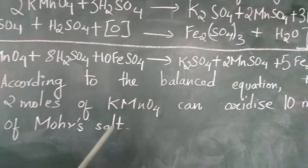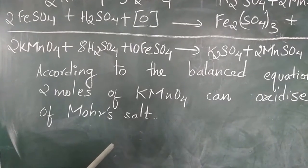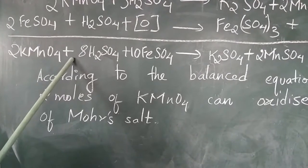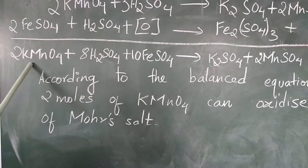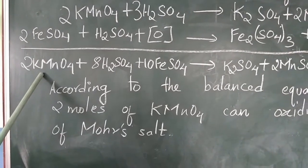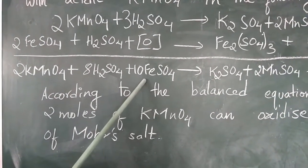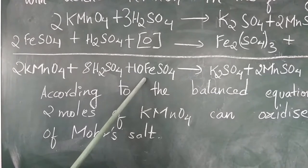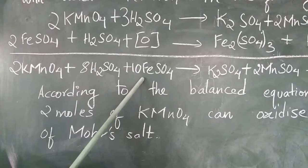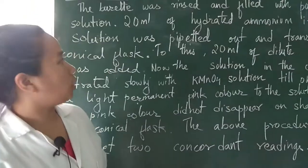The most important part is that from this balanced equation we can see that 2 moles of KMnO4 will oxidize 10 moles of Mohr's salt or ammonium iron 2 sulfate. Now this is the procedure for the experiment.